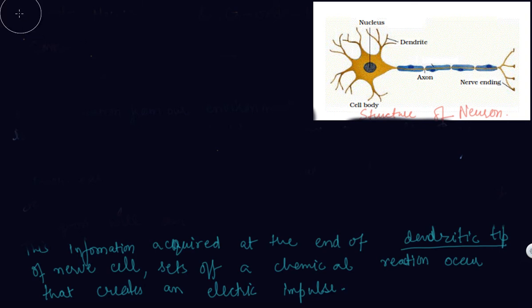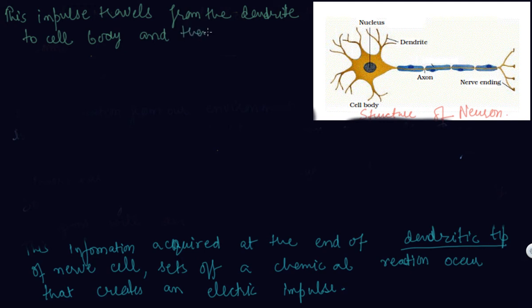This impulse travels from the dendrite to the cell body and then along the axon to its end. Here is the axon which is shown and the cell body. Here are dendritic tips from which information is acquired and passed to the axon and to the nerve endings.